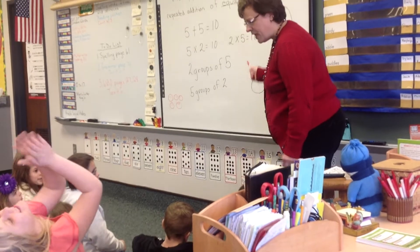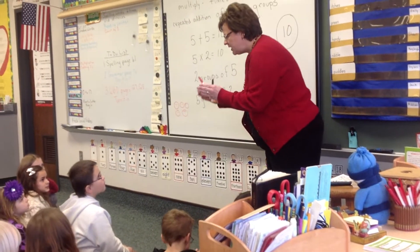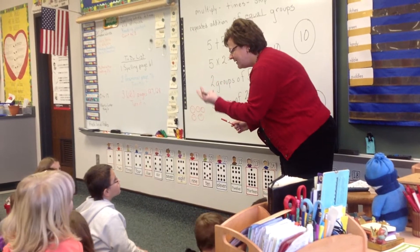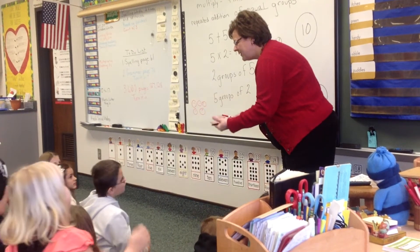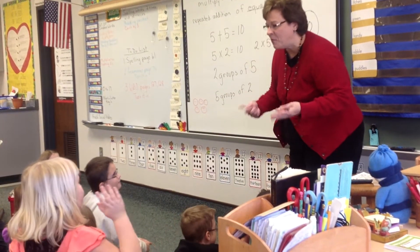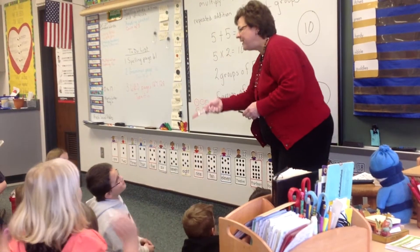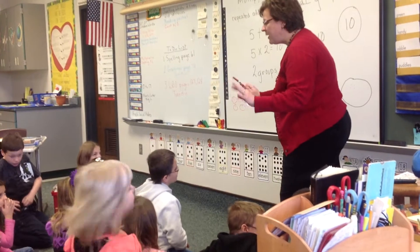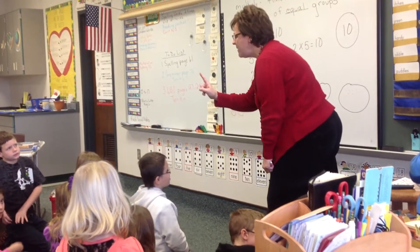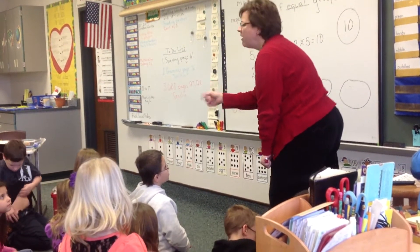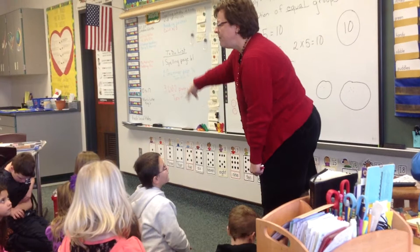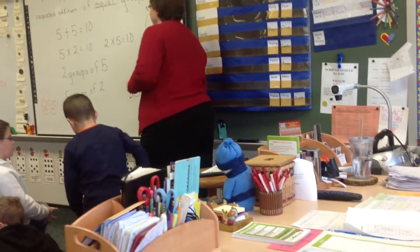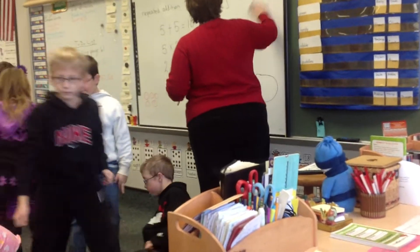Today we're going to explore this with three. We're going to make cards for each one of our multiples of three: three, six, nine, twelve, fifteen, eighteen, twenty-one, twenty-four, twenty-seven, and thirty. We're going to do it for all of them — you're going to make ten cards today. Before we make our first card, let's practice together. On your way back to your seat, grab your whiteboard, a marker, and an eraser.